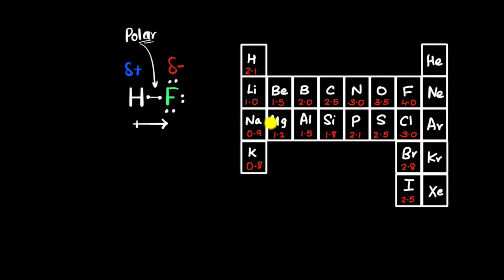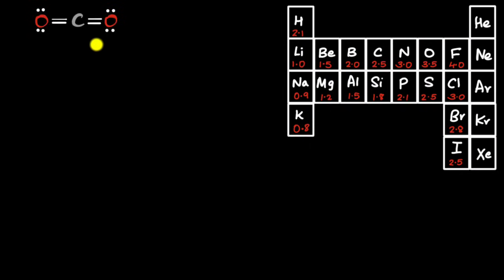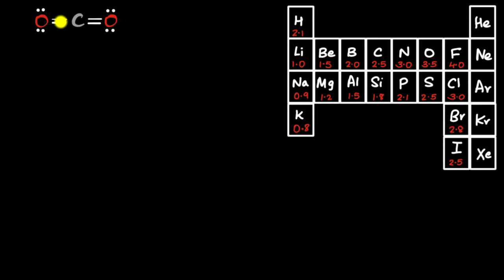Now let's take a more interesting example: carbon dioxide. Looking at its Lewis dot structure and electronegativities — carbon is 2.5, oxygen is 3.5 — oxygen is more electronegative than carbon, so the shared pair of electrons will be pulled more towards oxygen, making these bonds polar. But is the molecule itself polar? Not necessarily.